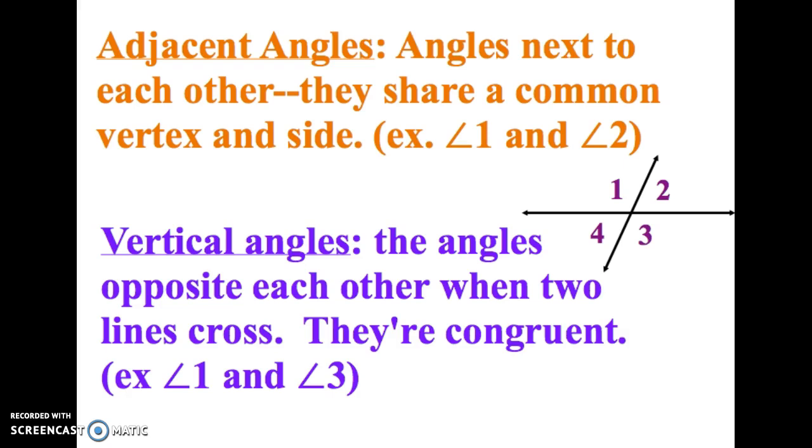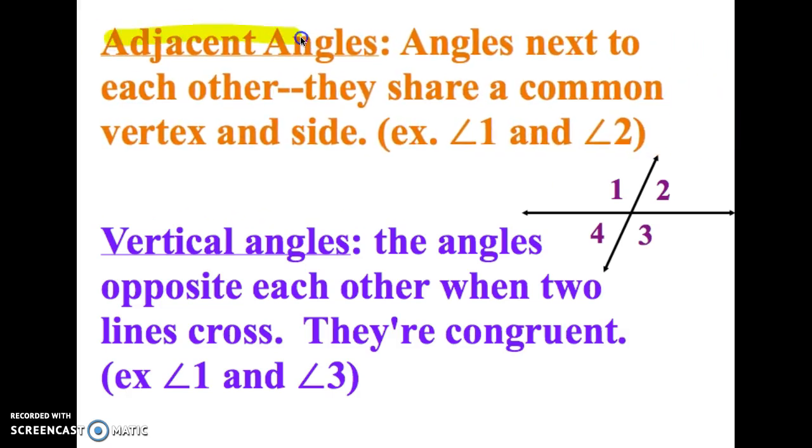So the first two things we need to know, types of angles. The first one's called adjacent. Adjacent angles are angles that are next to each other. So they share a common vertex and a side.